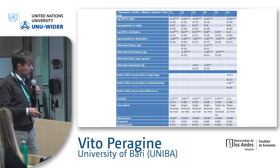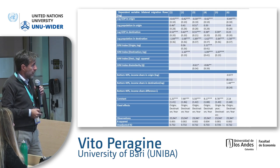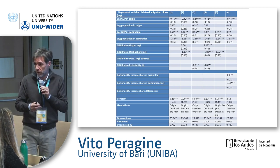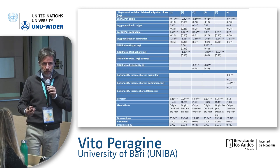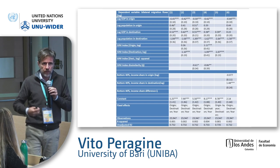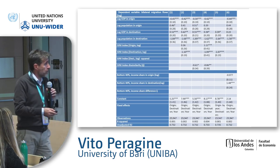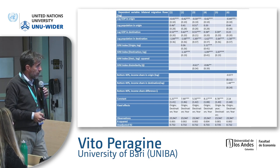In model four, we put together inequality in the origin country and inequality in the destination country, and they are both significant and in the right direction. Inequality in the origin country has a positive sign — that is the pull factor of inequality: the more unequal the country, the more you want to leave. And inequality in the destination country is a force against choosing that destination. The dissimilarity index here is quite significant and has a negative sign.